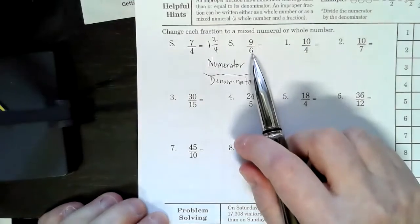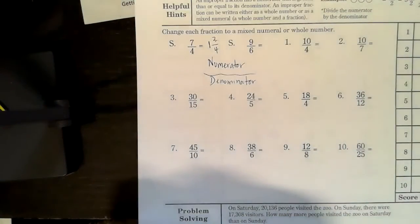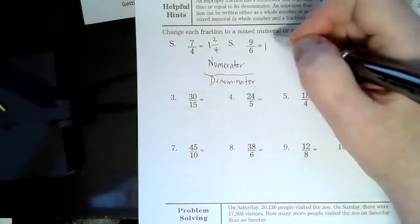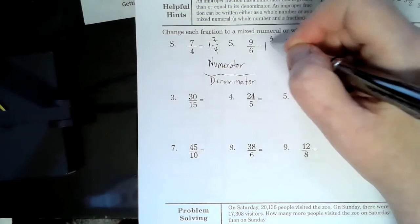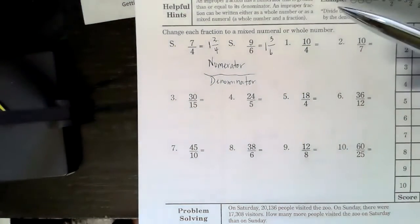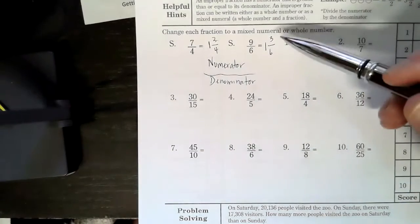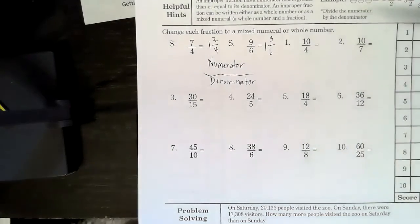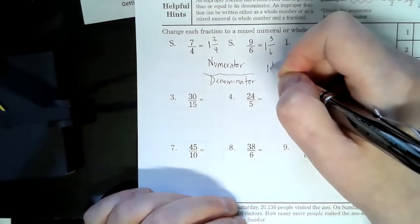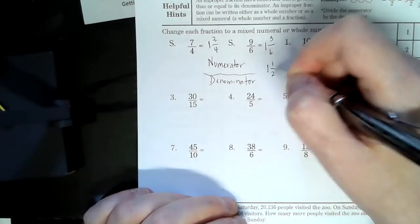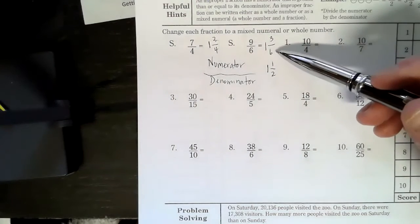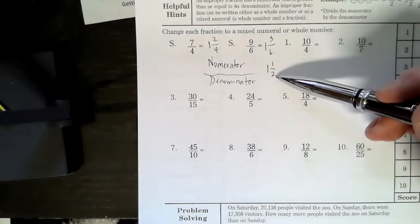So, for nine over six, nine divided by six is one, remainder three, over six. Now, three over six can be reduced, because three is half a six, so this answer is actually one and one half, because if we say three divided by three is one, six divided by three is two.